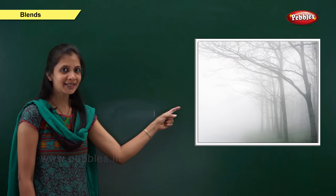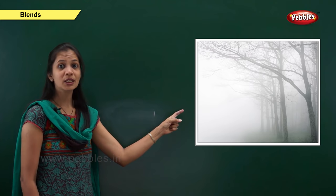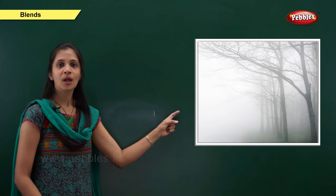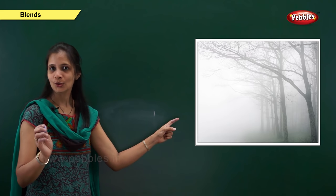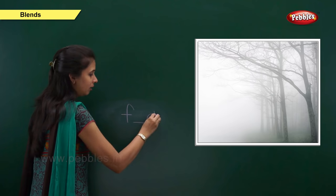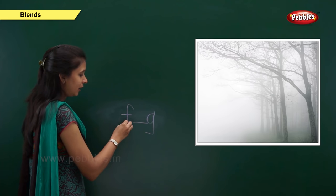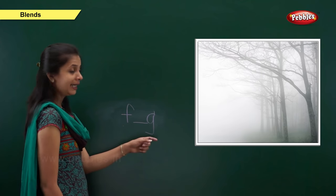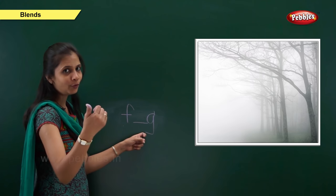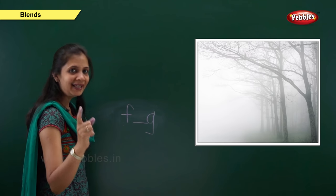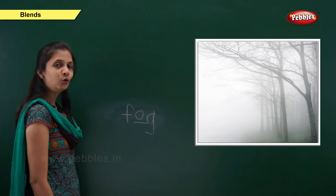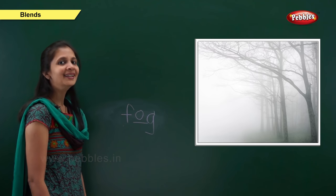Next one. Which picture is this? Yes, it is fog. What is the sound of this word? It is f, o, g. When the beginning sound is 'f', the letter is f. When the ending sound is 'g', the letter is g. When the middle sound is 'o', the vowel is o. So: f, o, g — fog.